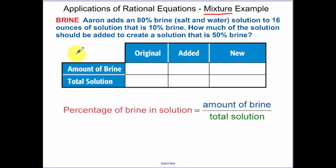Aaron adds 80% brine, which is salt and water solution, to 16 ounces of solution that is 10% brine. How much of the solution should be added to create a solution that is 50% brine? It helps yourself out if you set up this chart.